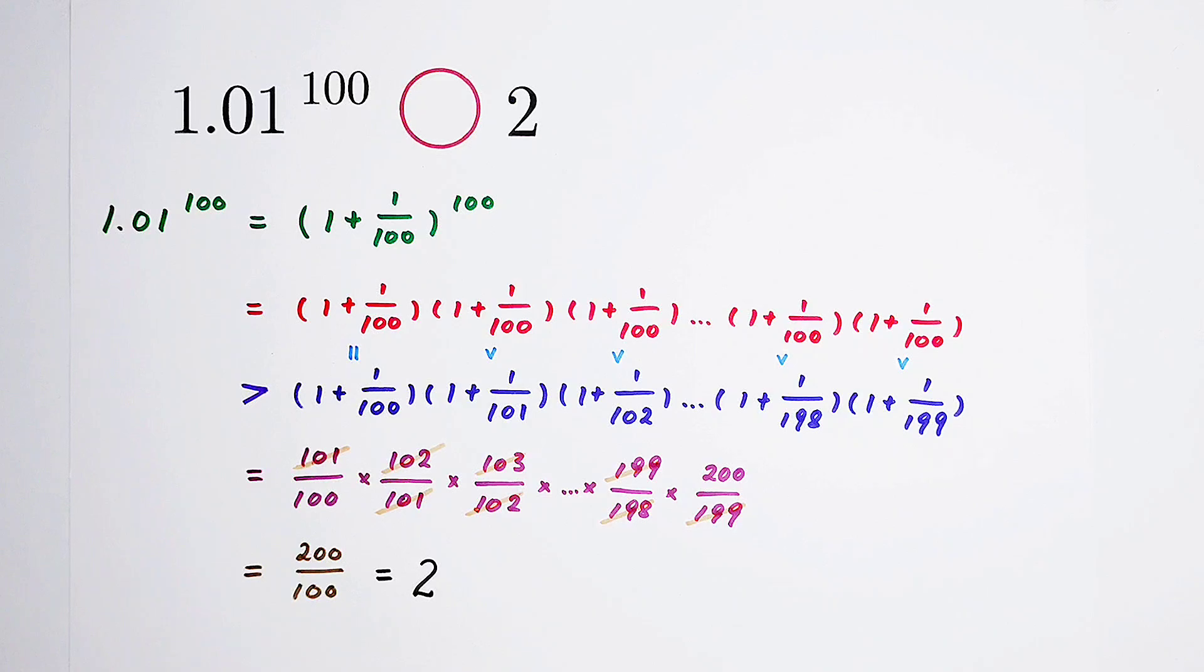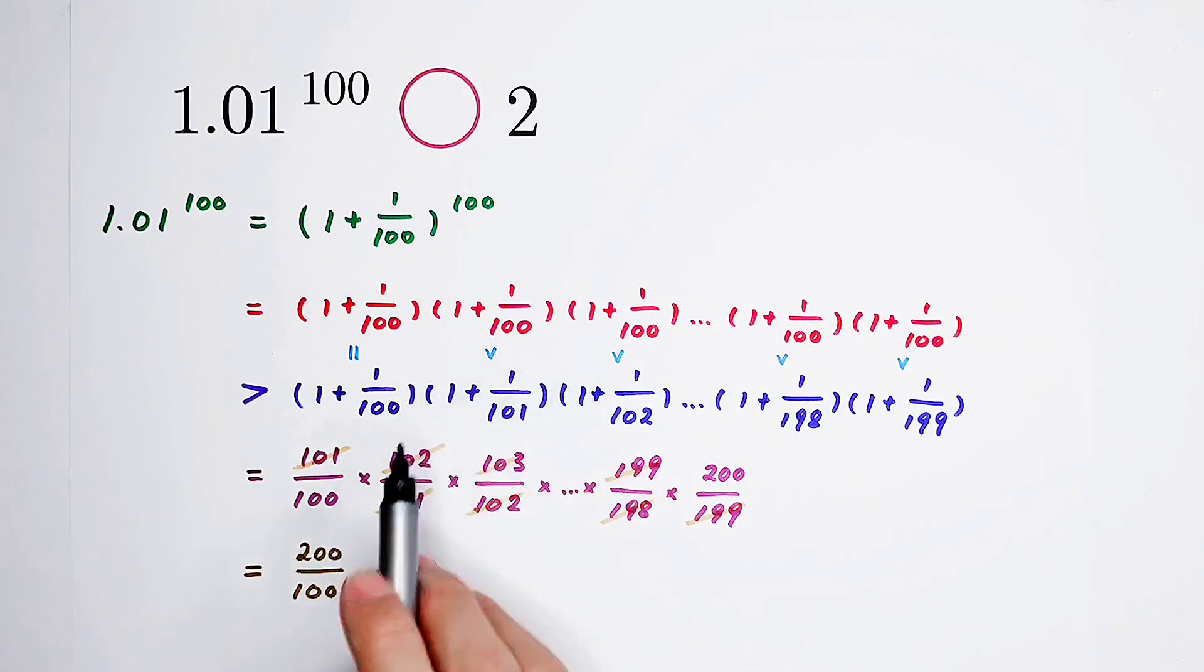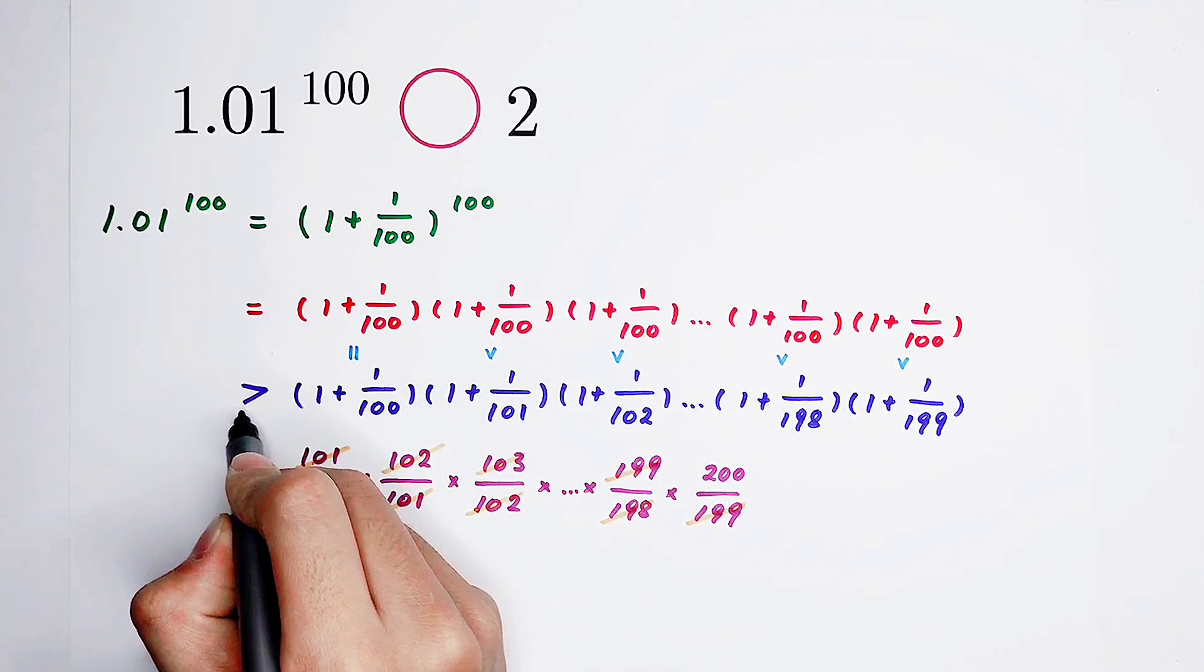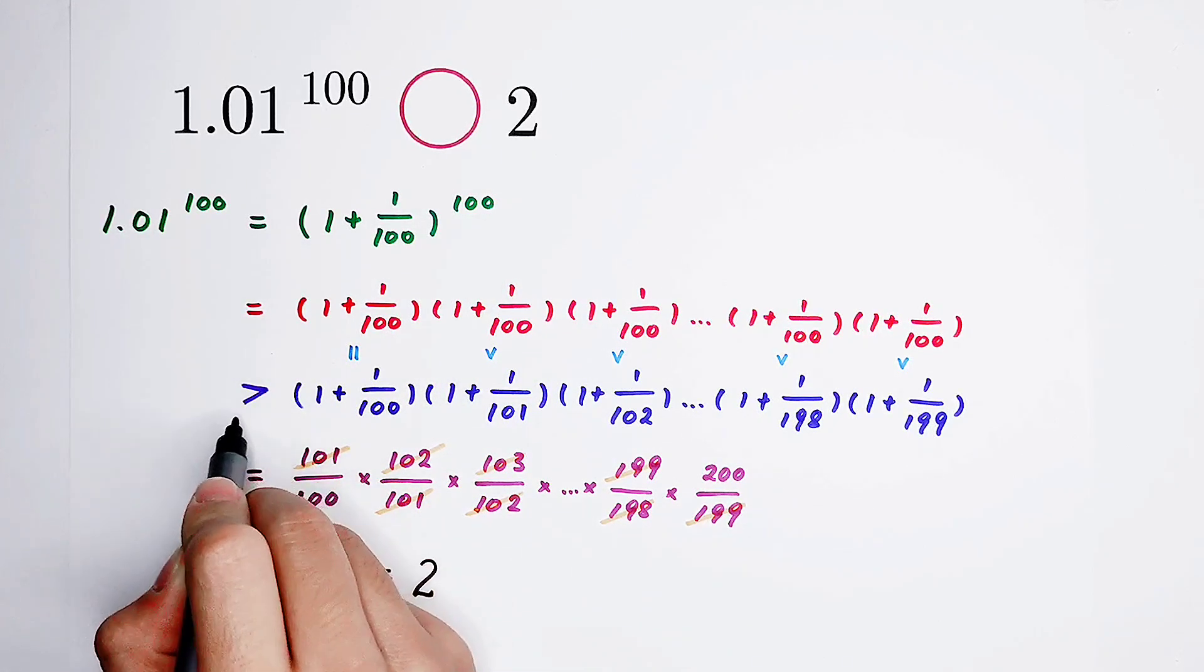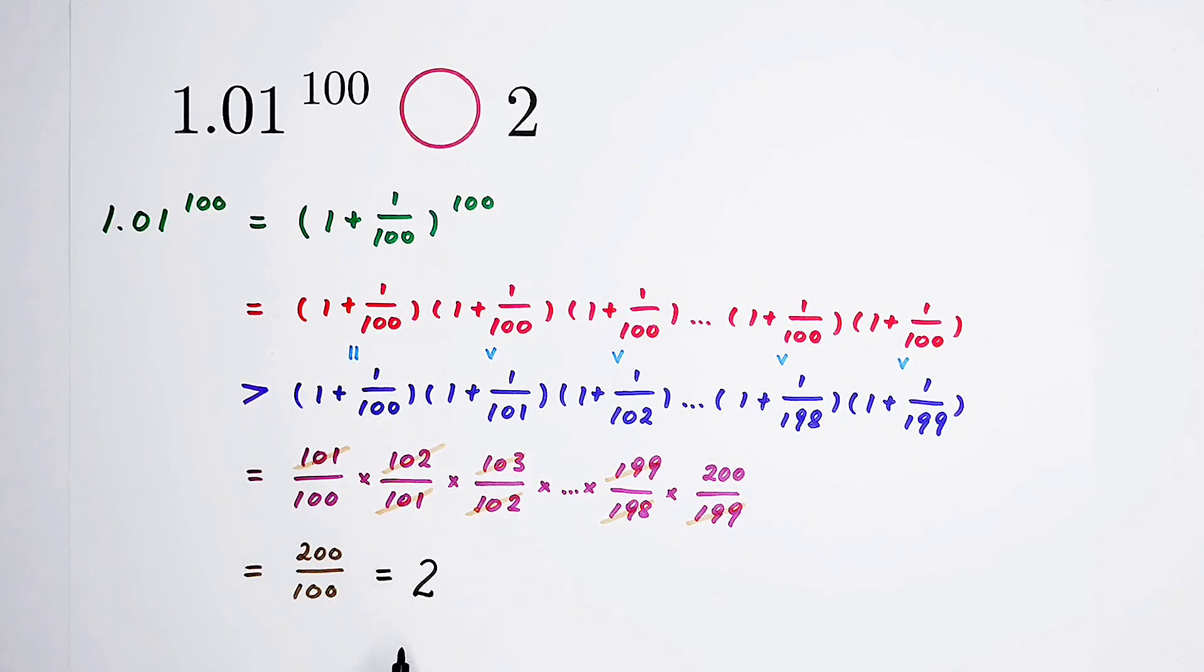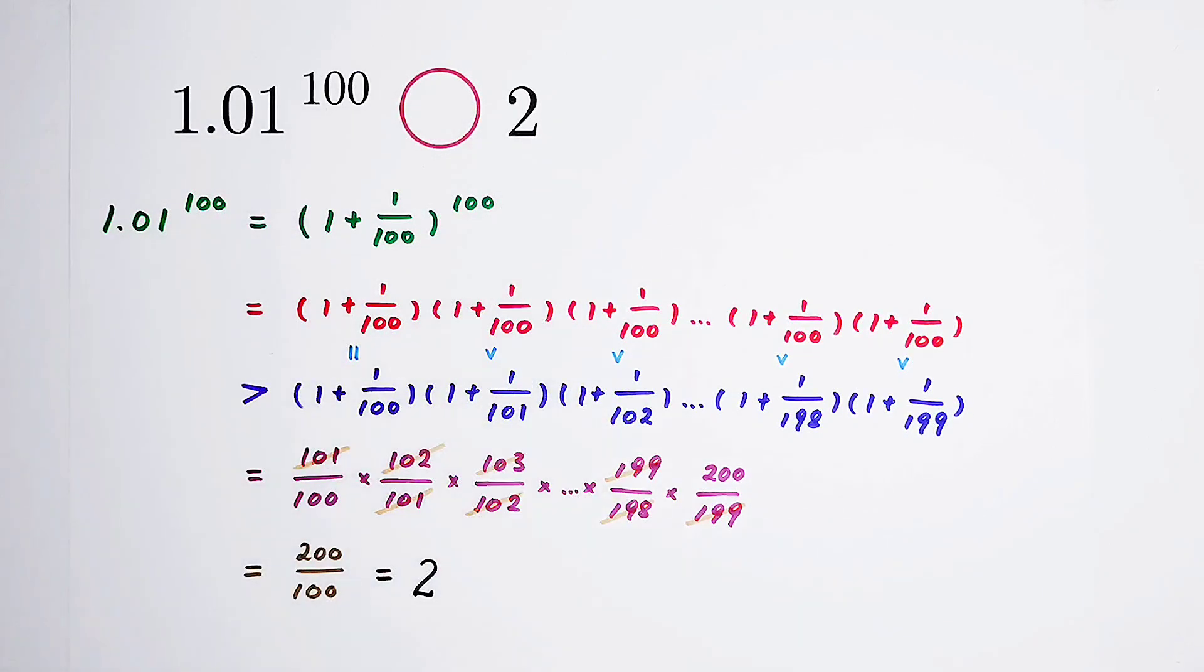So now what does it mean? Our left hand side is equal to this. Is equal to this. Is bigger than this. Is equal to this. Is equal to this. Is equal to 2. Is equal to our right hand side. So that means here appears a bigger. The left hand side is bigger than the right hand side. So we can get that 1.01 to power 100 is bigger than 2. Very good.